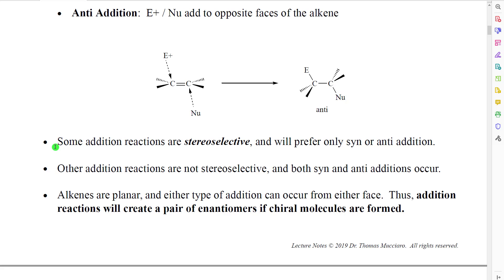When we look at all of the various reactions of alkenes, we will see that some addition reactions will be stereoselective — meaning there will be some reactions which will prefer only syn or only anti-addition, selecting one of the two stereochemical possibilities. Other addition reactions will not be stereoselective; in that case, we will see both syn and anti-stereoisomers formed in the products.